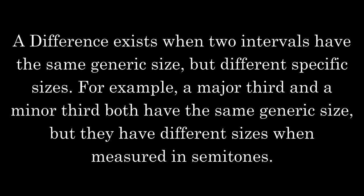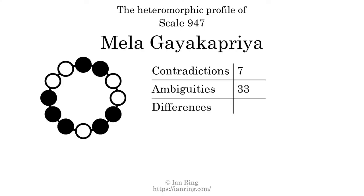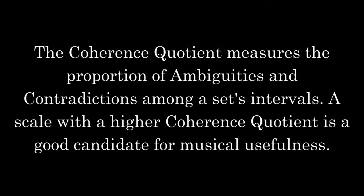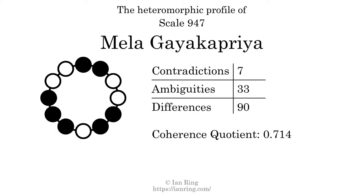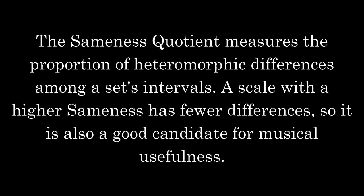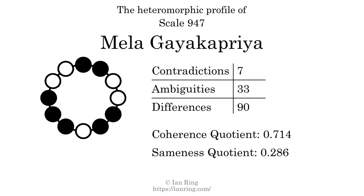A difference exists when two intervals have the same generic size but different specific sizes — for example, a major third and a minor third both have the same generic size but different sizes when measured in semitones. The number of differences in this scale is 90. The coherence quotient measures the proportion of ambiguities and contradictions among a set's intervals; a scale with a higher coherence quotient is a good candidate for musical usefulness. The coherence quotient is 0.714. The sameness quotient measures the proportion of heteromorphic differences; a scale with higher sameness has fewer differences, so it is also a good candidate for musical usefulness. The sameness quotient is 0.286.